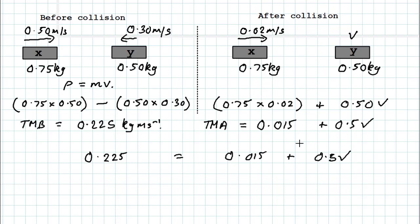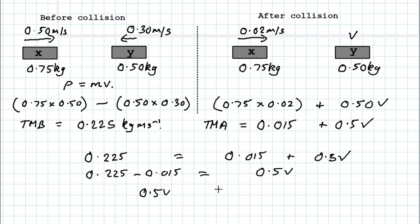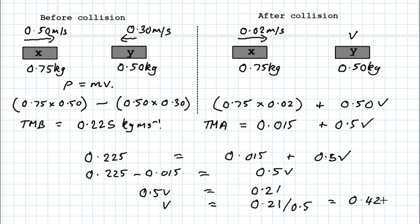Rearranging: 0.225 minus 0.015 equals 0.5v, giving 0.21 = 0.5v. Therefore v = 0.21 ÷ 0.5 = 0.42 meters per second. Because the answer is positive, vehicle Y must be moving to the right after the collision. This proves the first part of the question.